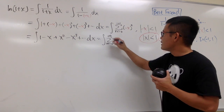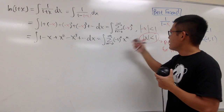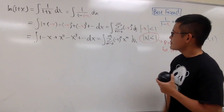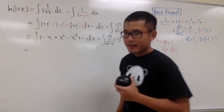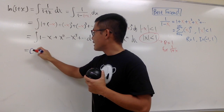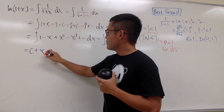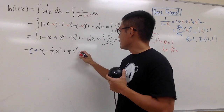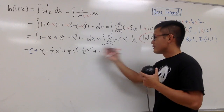In sigma notation, this is the integral of the sum from n equals 0 to infinity of negative 1 to the nth power times x to the nth power, dx. Now let's integrate. We'll put down the constant first, so we have c plus. Integrating 1 gives x, integrating minus x gives minus one-half x squared, then plus one-third x to the third power, and so on.